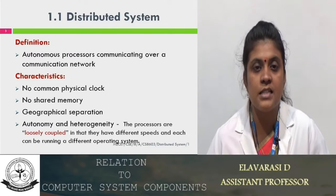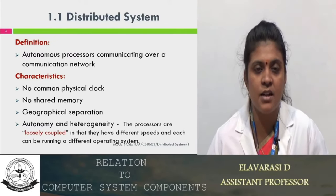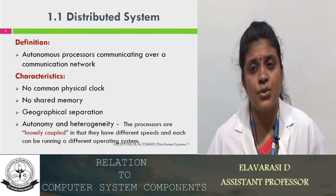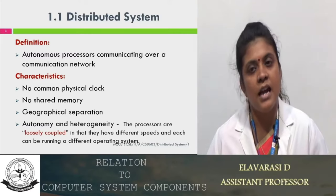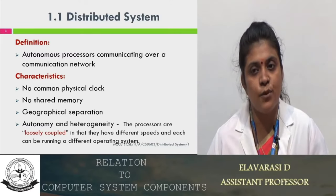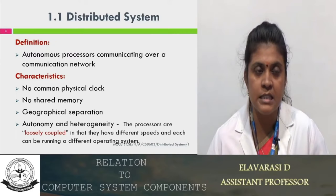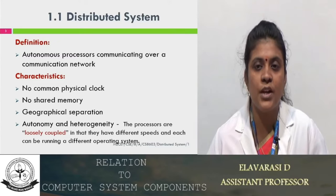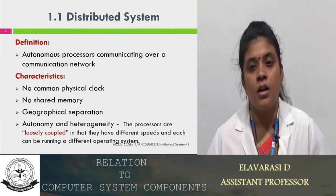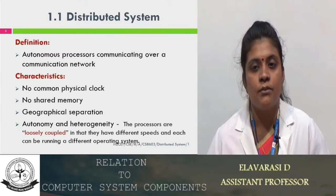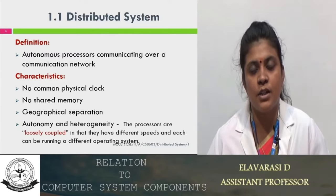The fourth characteristic is autonomy — it is independent, which means it may take its own decision. We call this autonomy and heterogeneity. The processors are loosely coupled and we call them autonomous. Heterogeneity means each processor will have a different operating system and different processors. The distributed system is a combination of heterogeneous processors and autonomous processors, meaning every processor has independent hardware and software — different operating systems and different hardware.